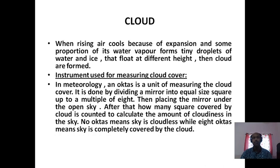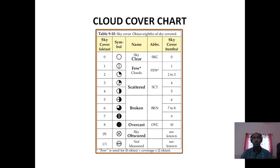Zero octas means the sky is cloudless, while 8 octas means the sky is completely covered by cloud. In the cloud cover chart, small circles are used as symbols to indicate the nature of cloud cover. If the sky is clear, you see a white circle; if the sky is overcast, you see a dark circle. Depending upon the nature of cloud cover, different kinds of symbols are used.